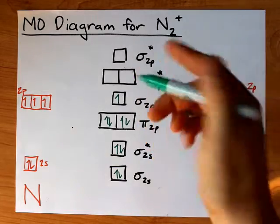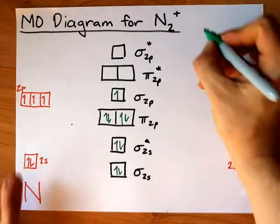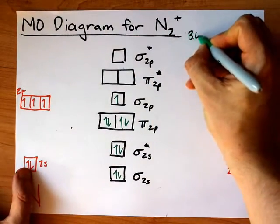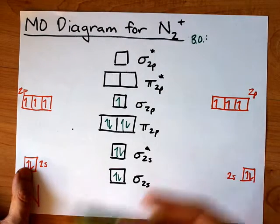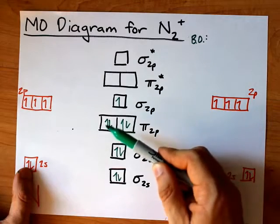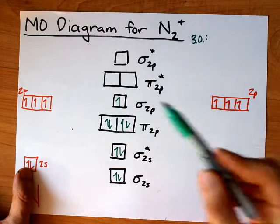Now, N2 plus is not a stable species, and that has to do with its bond order. Its bond order is the number of electrons in bonding molecular orbitals, that's 1, 2, 3, 4, 5, 6, 7,